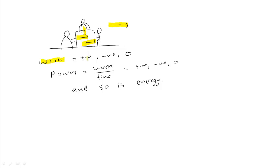So work is an example of scalar which has positive value, negative value, and zero. Power is work upon time, so if work is positive, power is positive; if work is negative, power is negative; if zero, then zero. Energy also can be positive, negative, or zero.